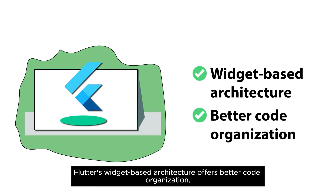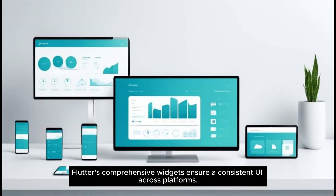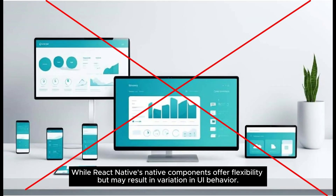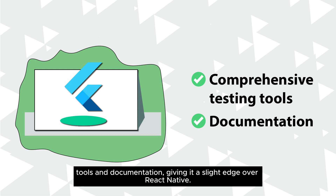Flutter's widget-based architecture offers better code organization, whereas React Native's reliance on a JavaScript bridge can lead to performance overhead. Flutter's comprehensive widgets ensure a consistent UI across platforms, while React Native's native components offer flexibility but may result in variation in UI behavior. Both frameworks offer robust testing capabilities, but Flutter provides comprehensive testing tools and documentation, giving it a slight edge over React Native.